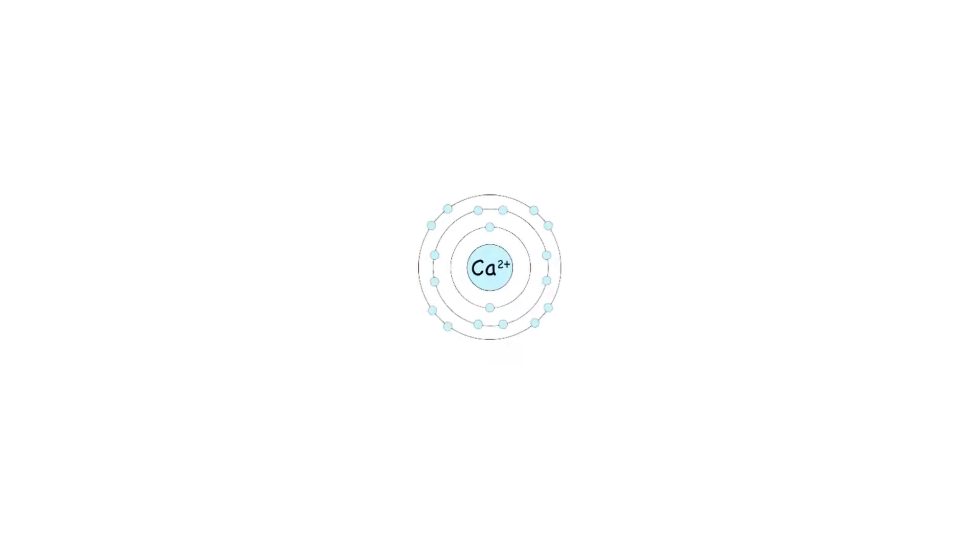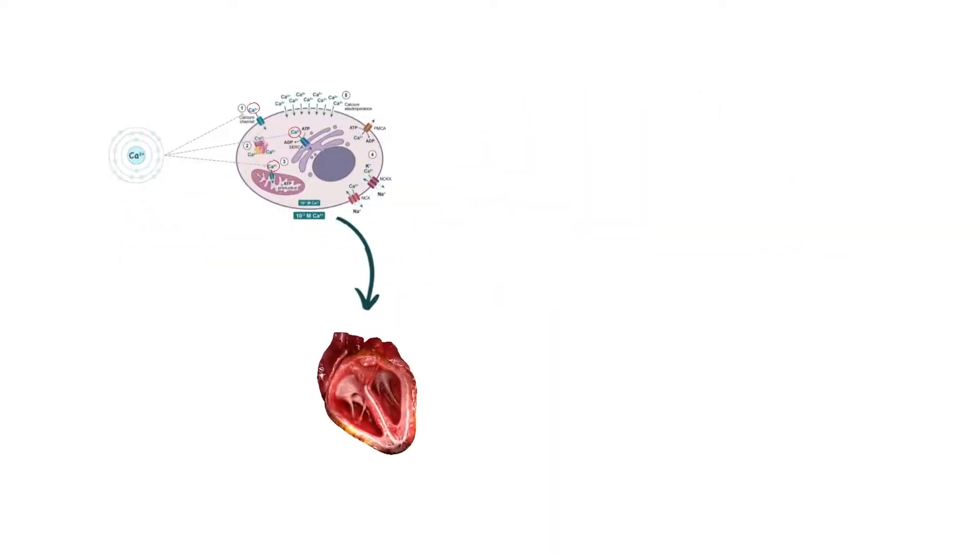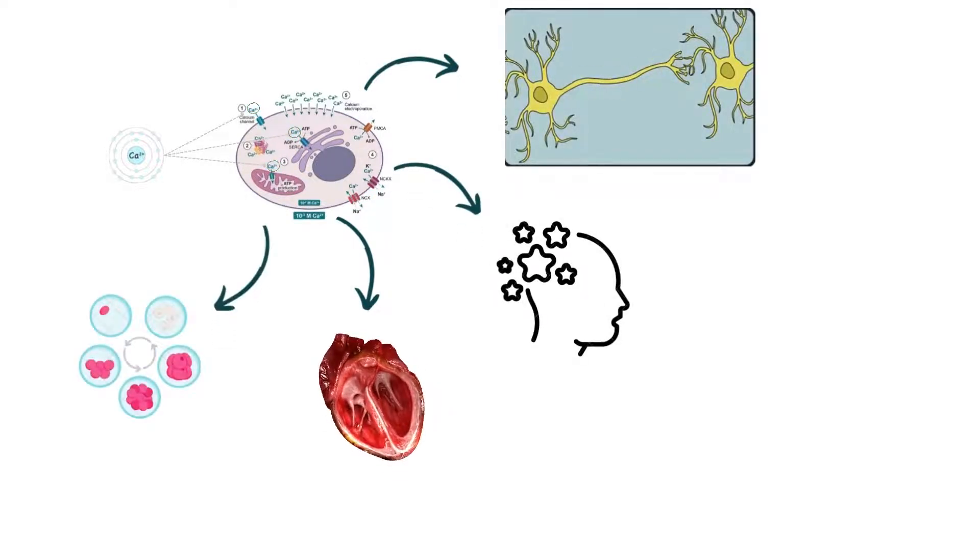Calcium ions, or Ca2+ ions, are one of the most important signaling molecules in cells. Almost all bodily biological processes, including heart and muscle contractions, neurotransmission of information, learning and memory, embryo formation and development, cell proliferation, etc., are regulated by calcium ions.